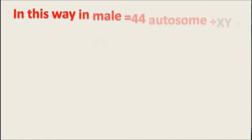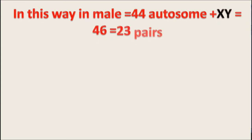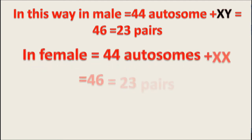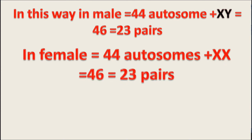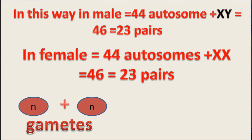In a male cell, the chromosome count is 44 autosomes plus XY, which equals 46, known as 23 pairs. In a female, 44 autosomes and one pair of XX chromosomes total 46, equal to 23 pairs. A diploid somatic cell contains 23 pairs of chromosomes, and a gamete or haploid cell contains half that number — only 23 chromosomes — and when two gametes fuse, the zygote has 46 chromosomes.